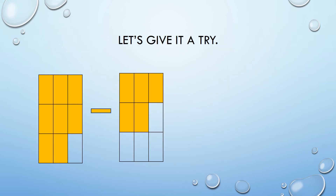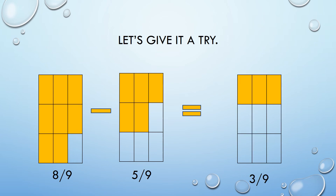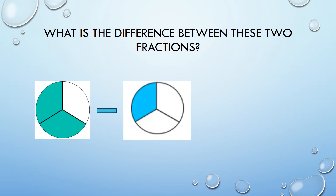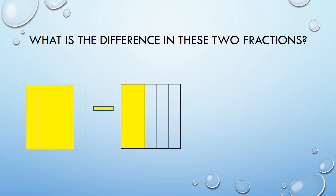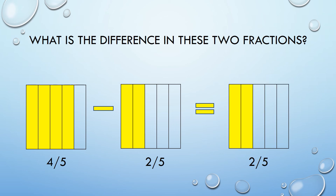Let's give it a try. If I start with eight-ninths and I take away five-ninths, what do I have left? The answer is three-ninths. The denominator stayed the same. I took five away from eight and came up with three for my numerator. Here's another one — what's the difference between these two fractions? Two-thirds minus one-third. The answer is one-third. What is the difference in these two fractions? Four-fifths minus two-fifths. The answer is two-fifths.